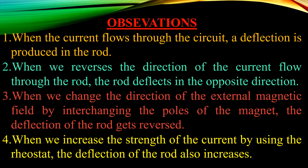Third, when we change the direction of the external magnetic field by interchanging the poles of the magnet, the deflection of the rod gets reversed. In the present setup, the north pole of the horseshoe magnet is at the bottom and south is at the top. If you interchange them — bringing north to the top and south to the bottom — the poles get reversed, and then the deflection of the rod also gets reversed.